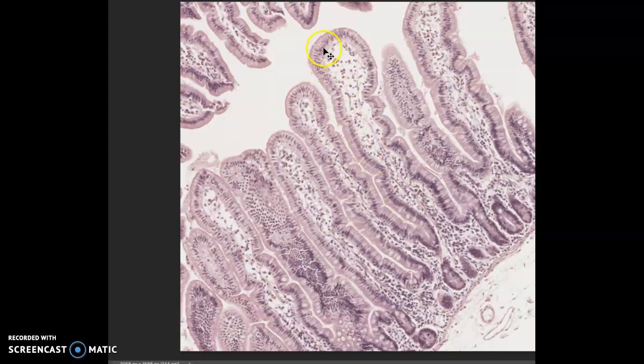So here are the villi. It's the submucosal layer. And these are the pretty goblet cells. So that's what you would be labeling on these. So thank you.